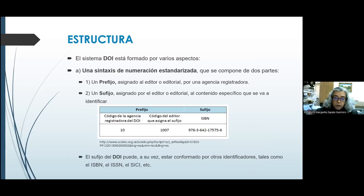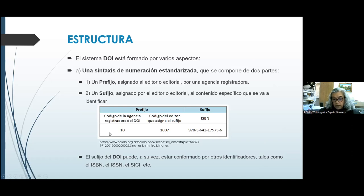¿Cuál es la estructura? El sistema DOI está formado por varios aspectos. El primero es una sintaxis de numeración estandarizada que se compone de dos partes: un prefijo asignado al editor o editorial por una agencia registradora, y un sufijo asignado por el editor o editorial al contenido específico que se va a identificar. En este cuadro podemos ver el prefijo construido con el código de la agencia registradora del DOI y el código del editor que asigna el sufijo. En este caso, el sufijo es el ISBN de un libro. Así queda constituido un identificador DOI.